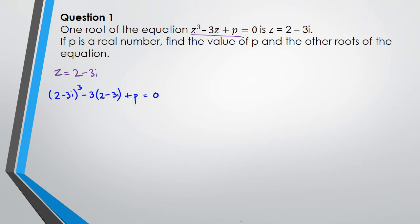I'm going to put this entire thing in the graphics calculator, and when I do that I get minus 52. So I've got minus 52 plus p equals zero, which means p is equal to 52.